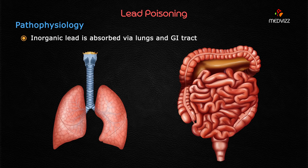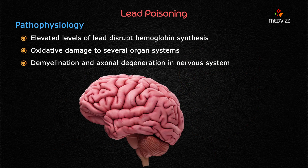Inorganic lead is absorbed via the lungs as well as the gastrointestinal tract. Increased concentration of lead causes disruption of hemoglobin synthesis, leading to an increase in free erythrocyte protoporphyrin (FEP). Increased delta-aminolevulinic acid causes oxidative damage to several organ systems, including demyelination and axonal degeneration in the nervous system. Remember: neurological manifestations are seen, but there are no psychiatric manifestations.